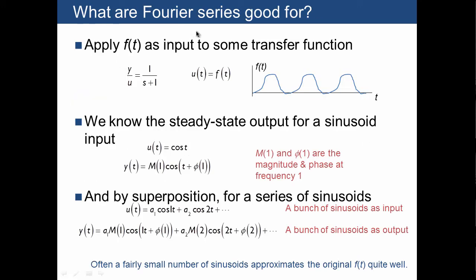So what are Fourier series good for? Imagine you have a transfer function such as 1 over s plus 1, and you want to apply some strange function as the input. We already know what the steady state output is for sinusoidal input.